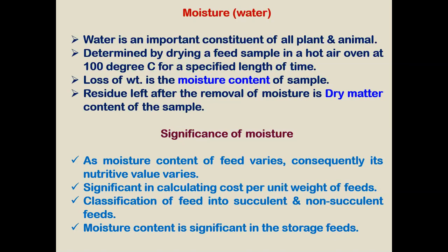Moisture content affects the perishability and nutritive value of a particular feed. It is significant in calculating the cost per unit weight of the feed, and is also very important in case of refrigeration, green forages, as well as grains. Classification of feed is also based on moisture content — succulent and non-succulent. Moisture content is also significant in the storage quality of the feed: when moisture is more, the storage quality is reduced.